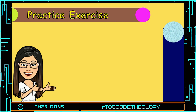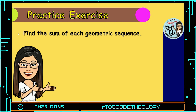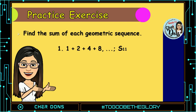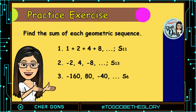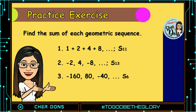Okay, now it's your time to practice. Find the sum of each geometric sequence. Number 1: 1 plus 2 plus 4 plus 8 and so on, solve for S of 11. Number 2: negative 2, 4, negative 8 and so on, find S of 13. And number 3: negative 160, 80, negative 40 and so on, determine the value of S of 6. Don't forget to comment down your answer so we can check it. Good luck!